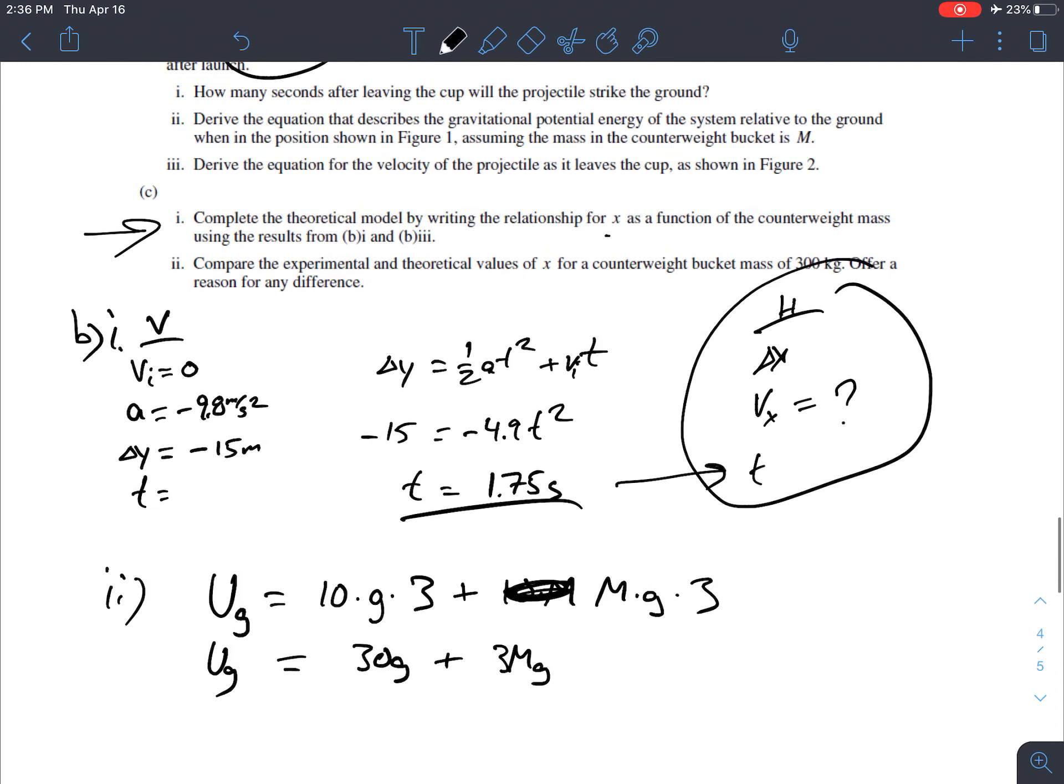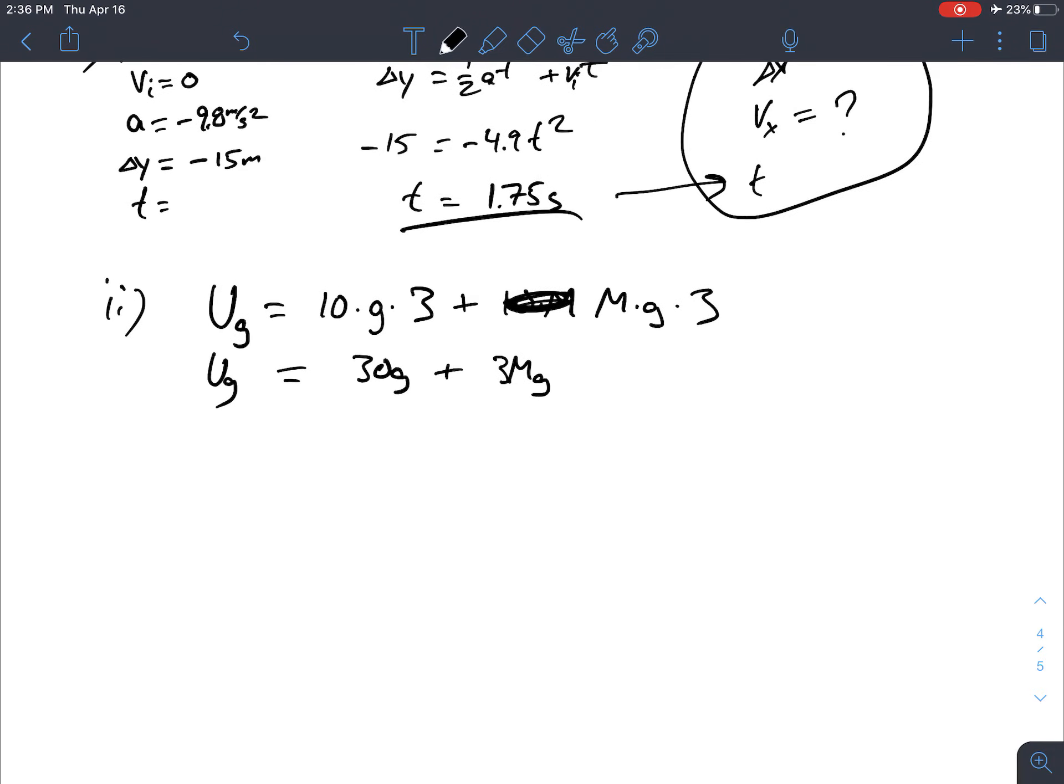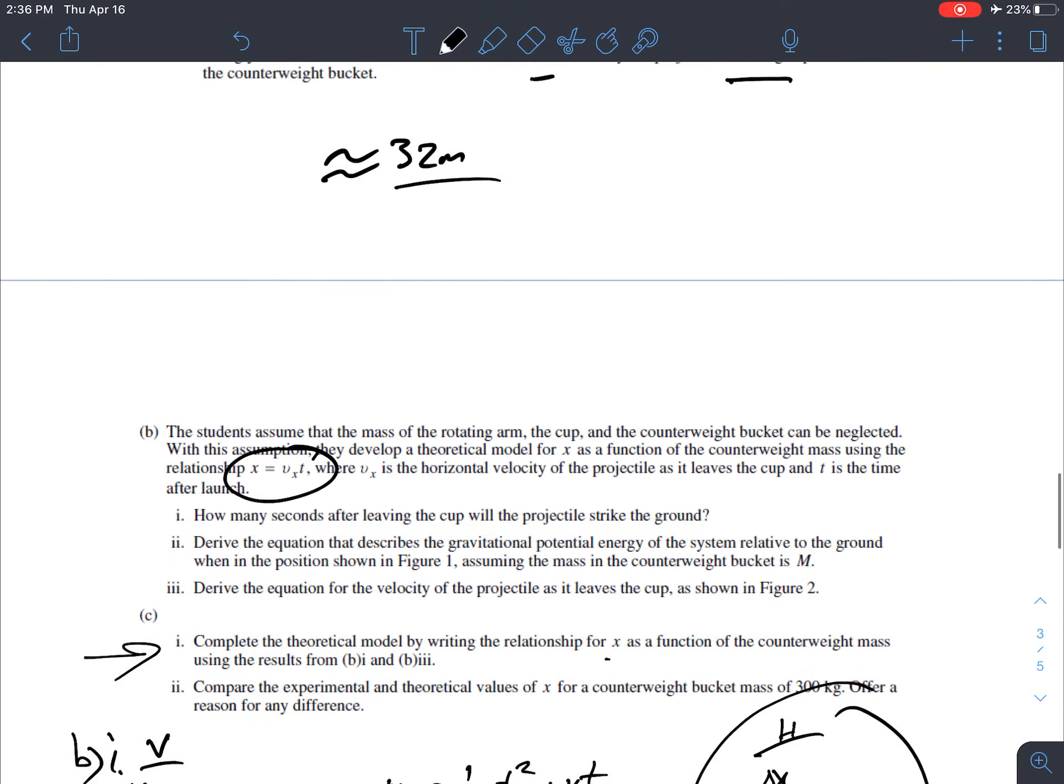All right. Now derive the equation for the velocity of the projectile. So they're really trying to hold our hands here and lead us through this problem. So energy has already been suggested to us, and you could do it using rotational stuff if you want to, but maybe it's easier to do just translational kinetic, regular old one half mv squared kinetic energy, because we're ignoring the arm. If you weren't ignoring the arm, then you'd have to do rotational stuff because you got a big rotating object. But you can treat both of these objects that are moving.